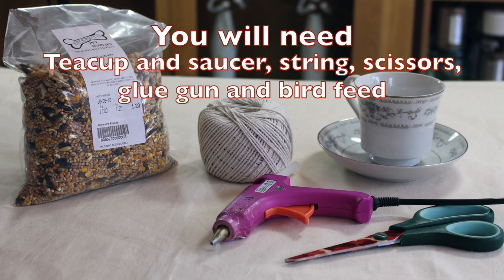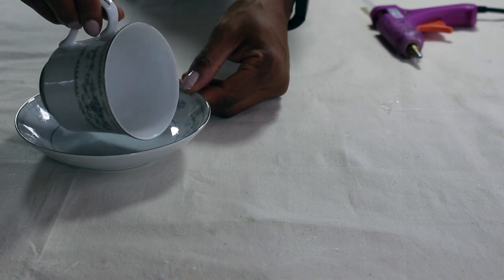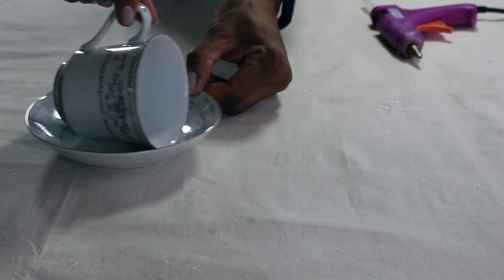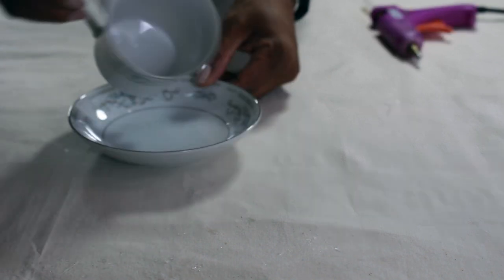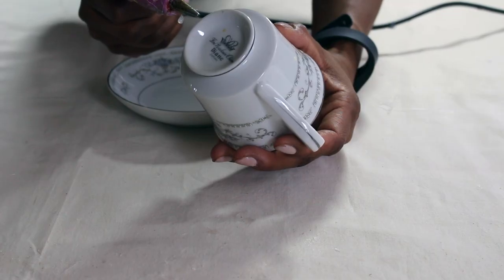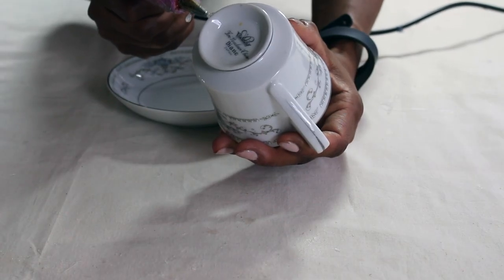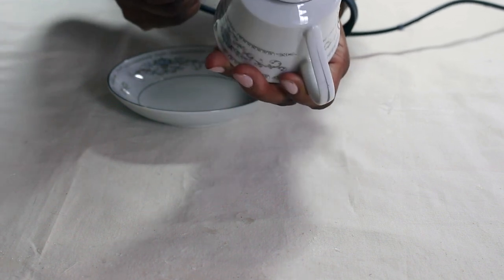And last but not least, our final feeder. This final bird feeder is probably the simplest of them all. All we're going to do is glue gun the cup onto the saucer and put some string onto the handle and some bird feed in the cup. You may want to use a stronger adhesive. I've just used a glue gun and it seems to be holding up well.